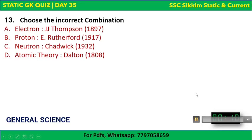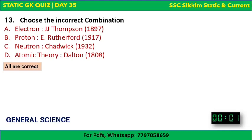Next question: choose the incorrect option from these — electron discovered by J.J. Thomson in 1897; proton discovered by Rutherford in 1917; neutron discovered by Chadwick in 1932; atomic theory given by John Dalton in 1808. The correct answer is that none is incorrect — all of these are correct.